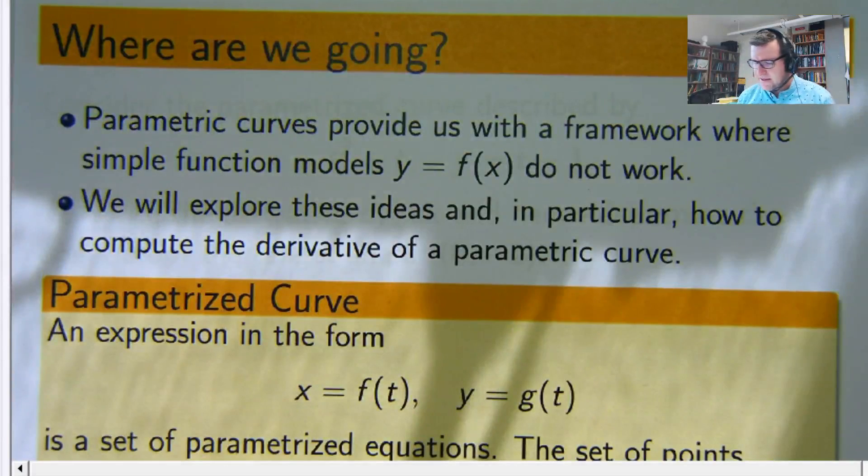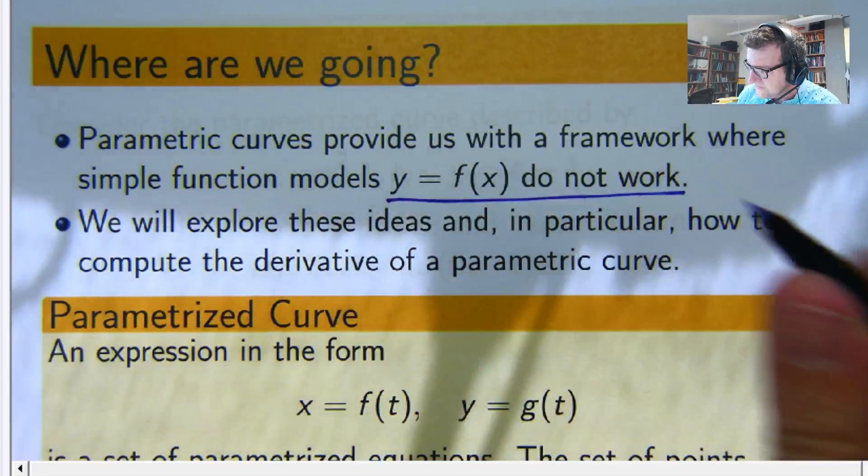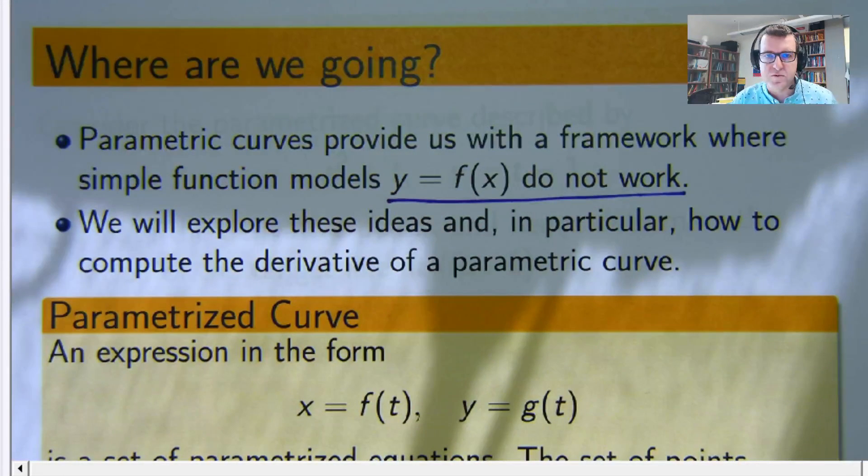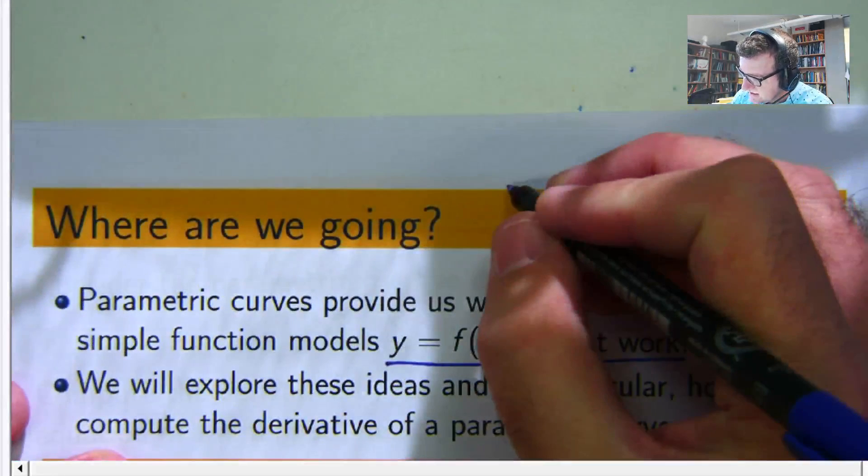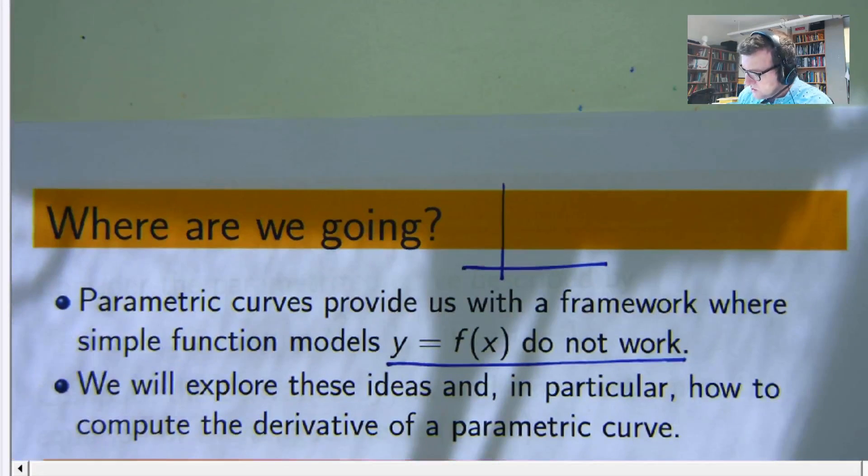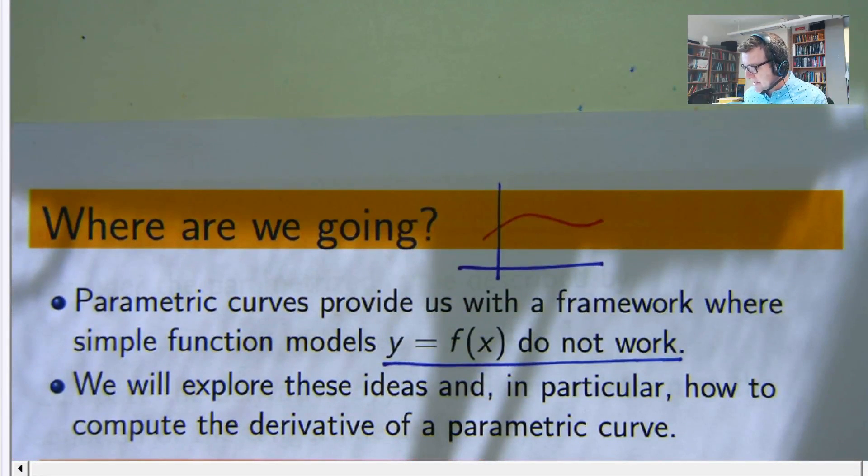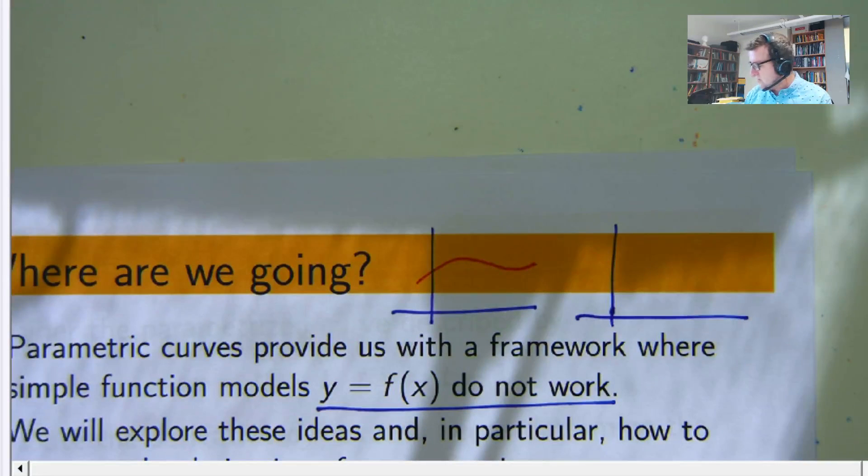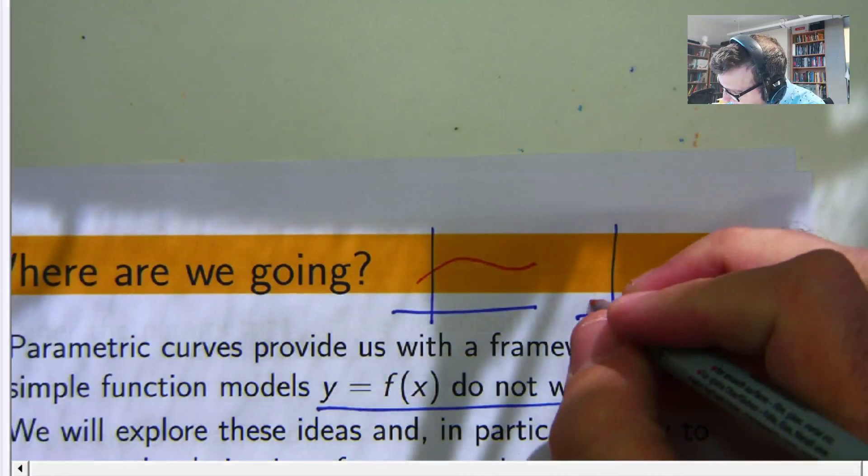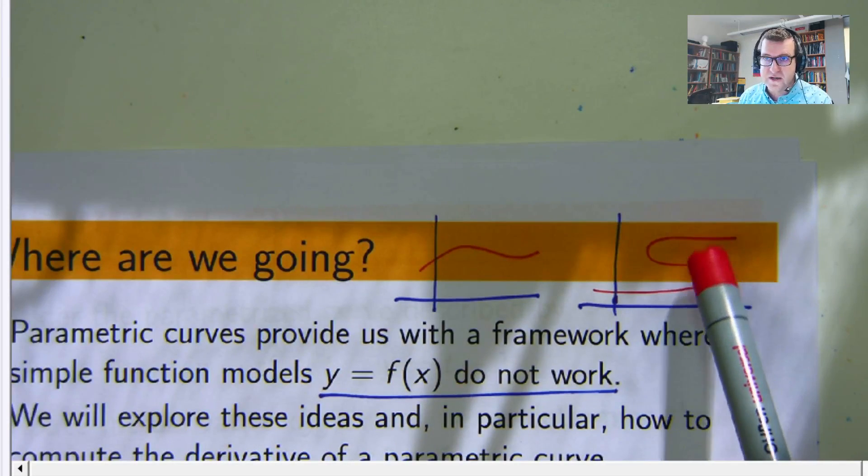So the big motivation behind parametric curves is that they provide an alternative to your standard y equals f of x model. If I draw a little picture here, the classic kind of y equals f of x model, your graph would look something like that. And in the parametric form, you can do all sorts of things. So you might be able to model things that double back on themselves like this, where you couldn't use this to describe this situation.